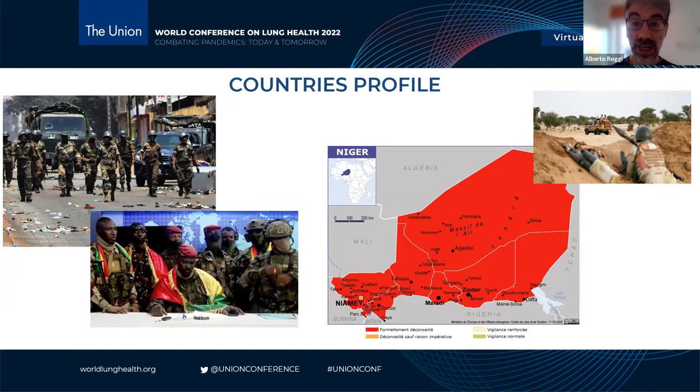In Guinea, there was a military strike, and terrorist attacks are very frequent in Niger. As you can see on the map of Niger, the entire north is a red zone. In this type of setting, it is very difficult to plan and supervise peripheral health centers, carry out TB active case finding activities, and organize transport of samples from peripheral health facilities to reference and national laboratories.